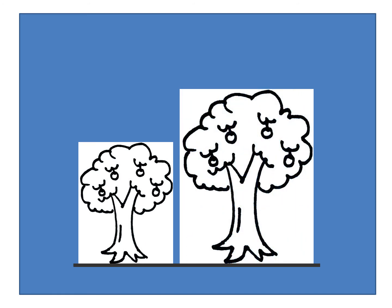We can see one tree is shorter — I will label it shorter. And the other tree is taller — I will label it taller. Now you can draw a picture of two things, label them shorter and taller, or even same height, and post a picture on Edmodo.